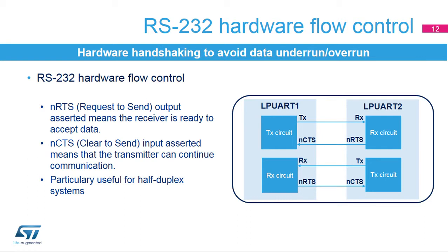In the RS-232 standard, it is possible to control the serial data flow between two devices by using the NCTS input and the NRTS input. These two lines allow the receiver and the transmitter to alert each other of their state. This slide shows how to connect two devices in this mode. The idea is to prevent dropped bytes or conflicts in case of half-duplex communication. Both signals are active low.